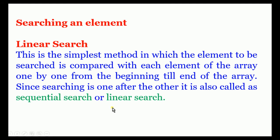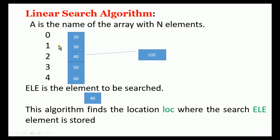In a set of values, searching one value from beginning to end is linear search. Here A is the array with n elements, and each value is represented by loc — a counter to move one by one. Subscripts are 0, 1, 2, 3, 4. The variable ele is the element to be searched, for example 40. This algorithm finds the location loc where the search element is stored.